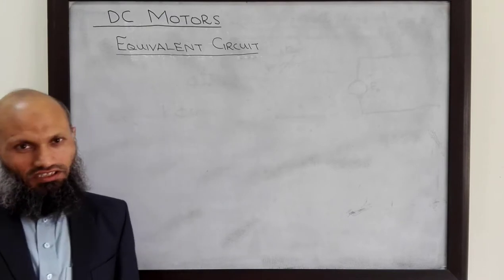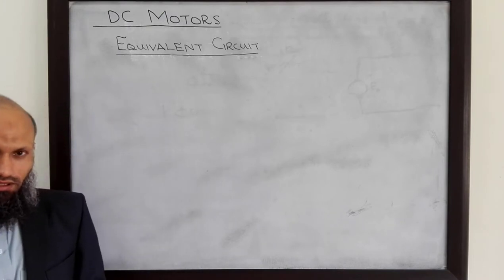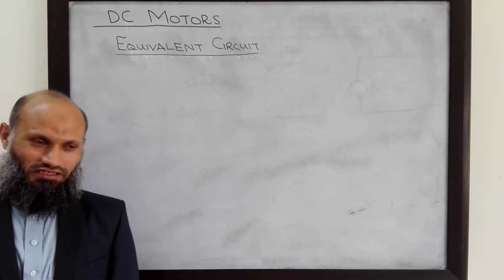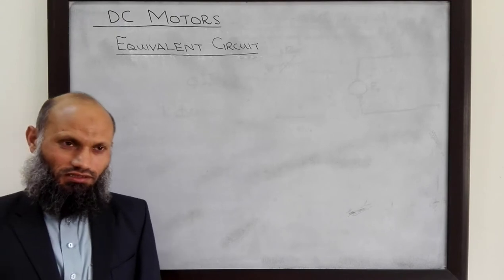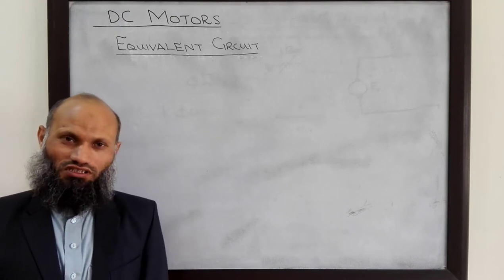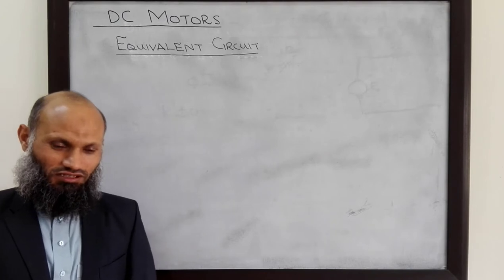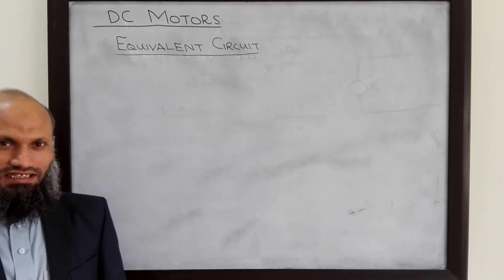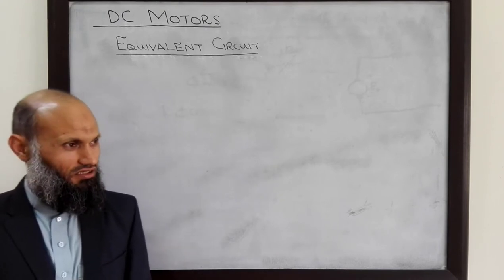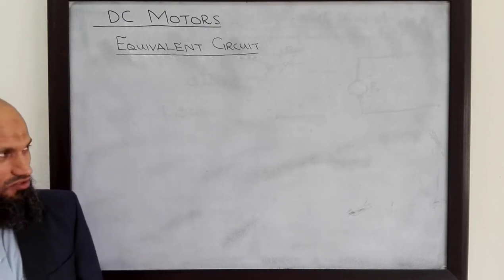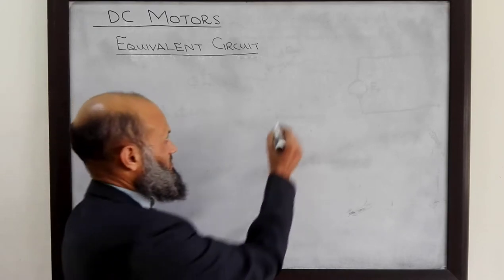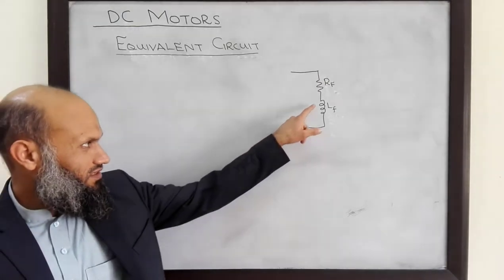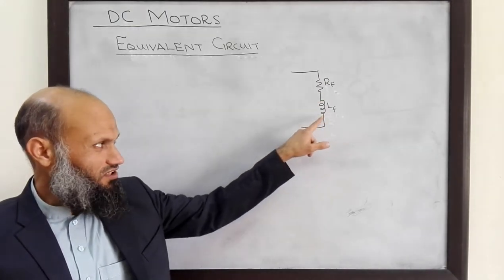These main poles can be either electromagnets or permanent magnets. Generally, in small machines they use permanent magnets, and in bigger machines they use electromagnets. So, if the machine has electromagnets, then its equivalent electrical circuit can be represented by this diagram. On electromagnets, we have field windings, and these field windings are represented by a coil, LF.